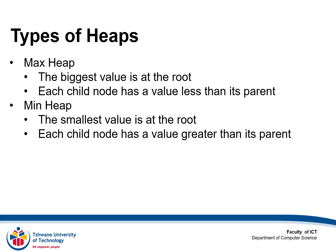There are two types of heaps: the max heap and the min heap. With the max heap, the biggest value is at the root. Every child node will have a value that is less than its parent, because you expect the big dogs to be at the top.